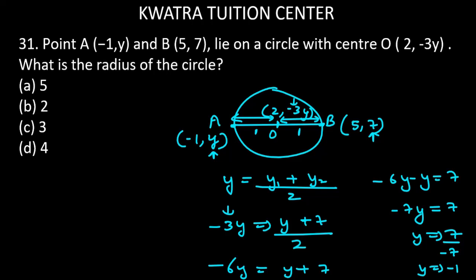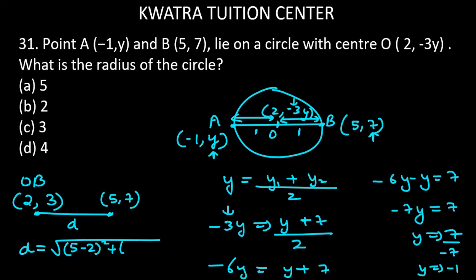So let's see. Point O is at 2 and this will be 3 because -3 times -1 is positive 3. And the value of B is 5 comma 7, so we have to find the distance between them. This is my point B, this is point O. We will find the distance because we need the radius of the circle. So let's find the distance between these two points, x2 minus x1 first.